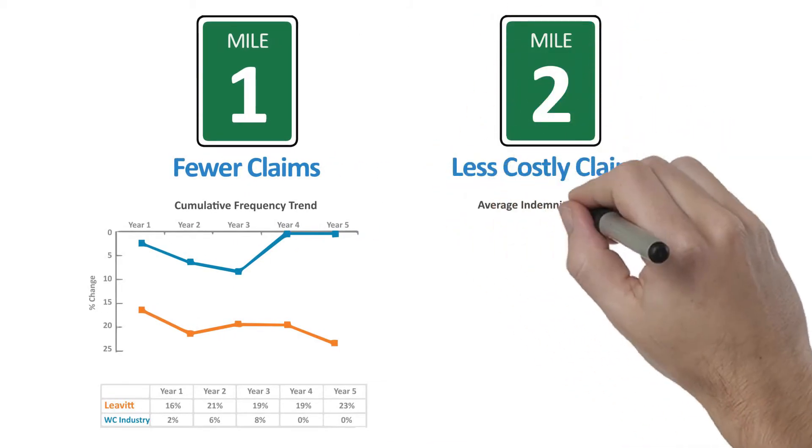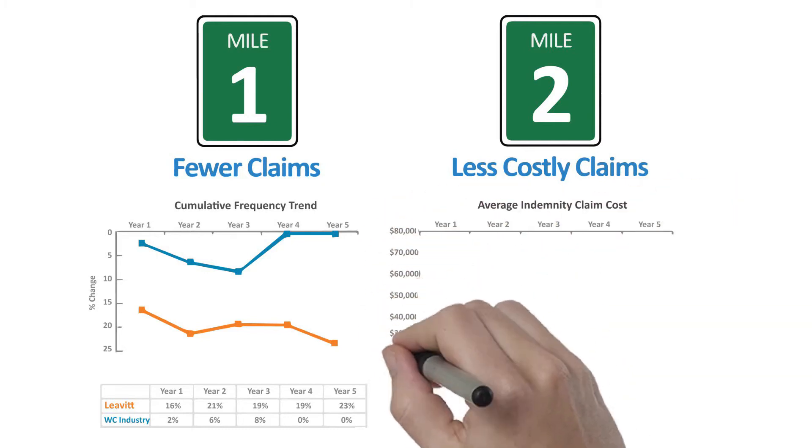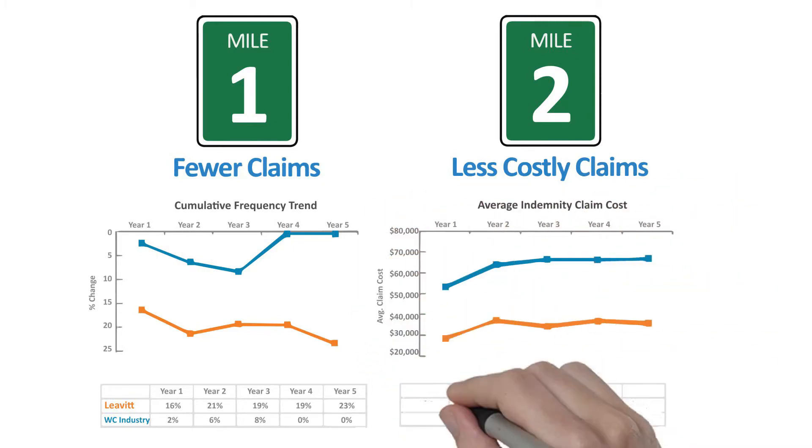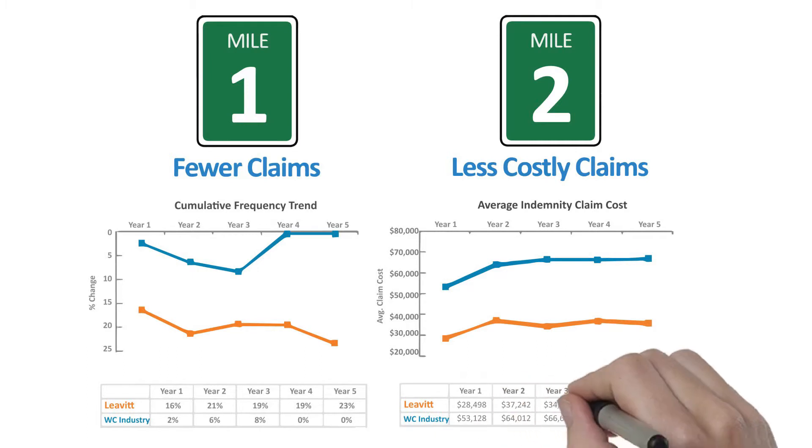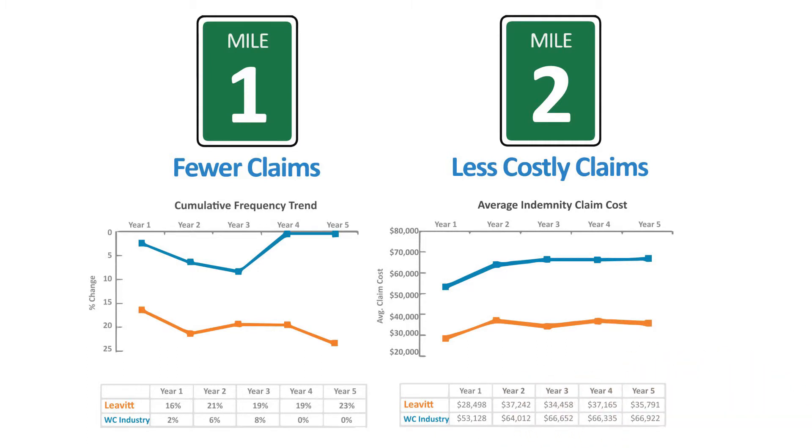Next, they worked on decreasing the cost of injuries. With the benefits of an industrial nurse without the expense, the Nurse Triage Program reduced the number of reported claims by 43%.